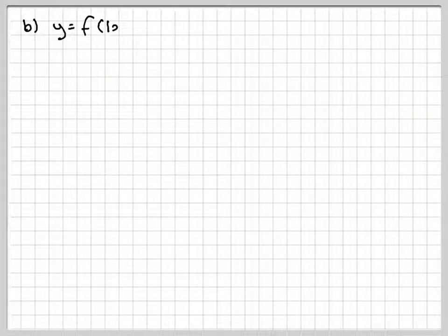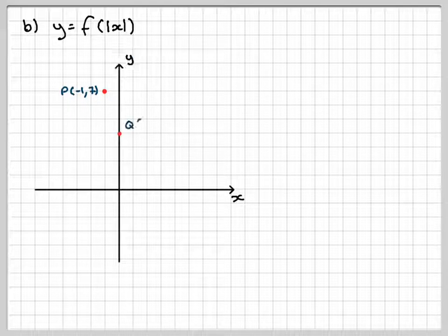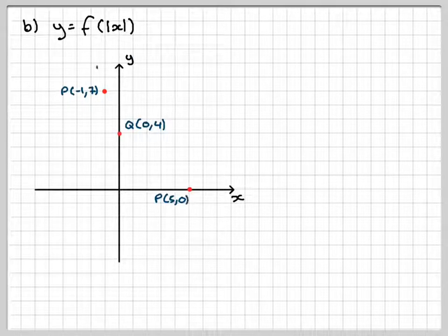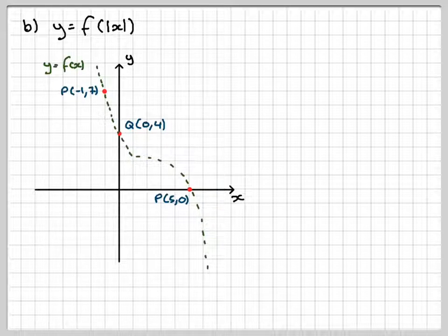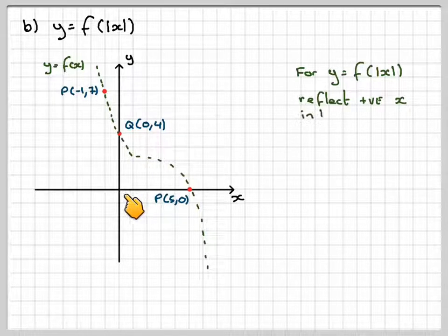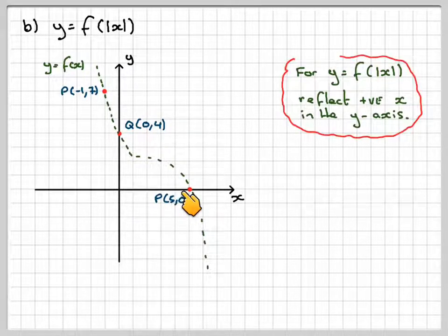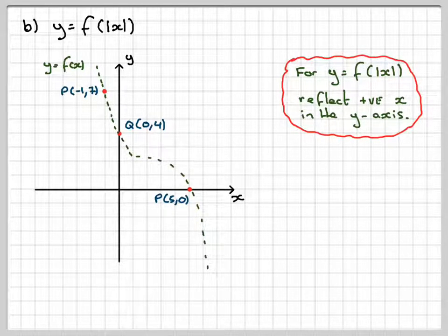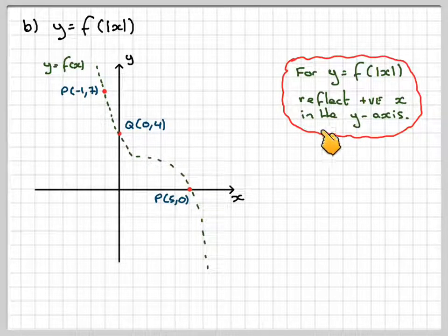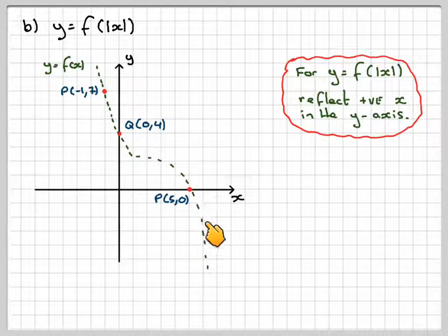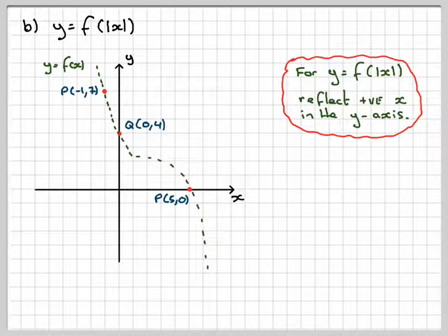Part b is f of the absolute value of x. That's the original function. Now, if you take any negative x here, then it's going to give the same value as any value of x over here. So for y equals f of the absolute value of x, you reflect the positive x in the y-axis. So this bit here of the graph just gets reflected over here.